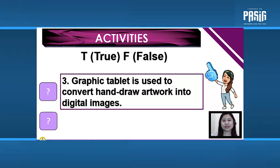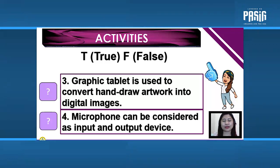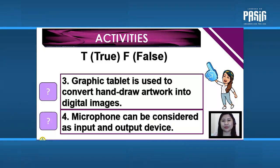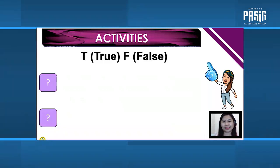Number 3: Graphic tablet is used to convert hand-drawn artwork into digital images. Number 4: Microphone can be considered as both an input and output device. Answers: 3 — True. 4 — False.